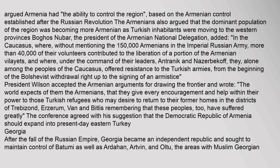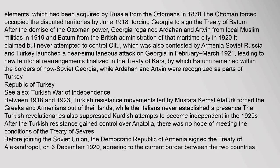Georgia: After the fall of the Russian Empire, Georgia became an independent republic and sought to maintain control of Batumi as well as Artehan, Artvin, and Oltu — the areas with Muslim Georgian elements which had been acquired by Russia from the Ottomans in 1878. The Ottoman forces occupied the disputed territories by June 1918, forcing Georgia to sign the Treaty of Batum. After the demise of Ottoman power, Georgia regained Artehan and Artvin from local Muslim militias in 1919, and Batum from the British administration in 1920. Soviet Russia and Turkey launched a near-simultaneous attack on Georgia in February to March 1921, leading to new territorial rearrangements finalized in the Treaty of Kars, by which Batumi remained within the borders of now Soviet Georgia, while Artehan and Artvin were recognized as parts of Turkey.